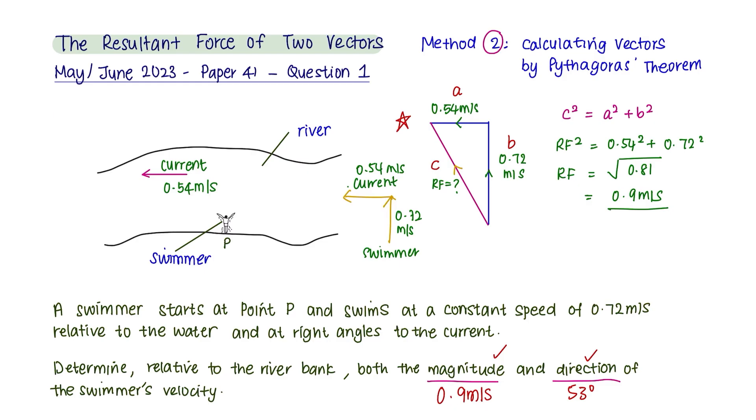Next, to find the direction of the swimmer's velocity, you need to find at which angle the swimmer moves. Since the current is pushing him to the left and this is your resultant force, this is the angle that you're looking for. We can use SOHCAHTOA to remember how to apply sines and cosines to resolve the sides of a triangle.